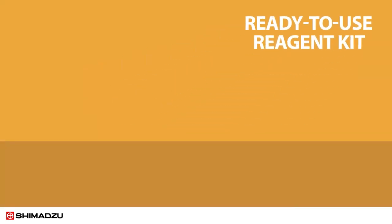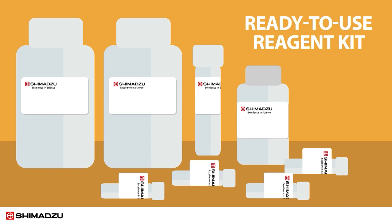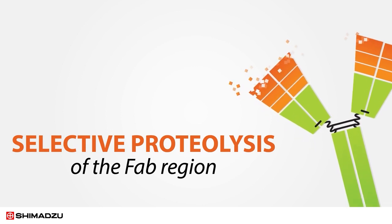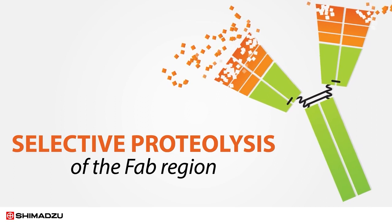It's a ready-to-use reagent kit optimized for capturing antibodies from blood or other biological samples using an immunoglobulin collection resin. NSMAL then enables selective proteolysis of the FAB region of these antibodies using trypsin-immobilized nanoparticles.